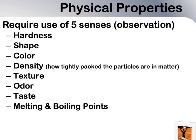Physical properties describe the appearance of a substance or object. They also describe their melting, boiling, and freezing points, density, their ability to shine, the ability to bend, and whether they're magnetic or not.